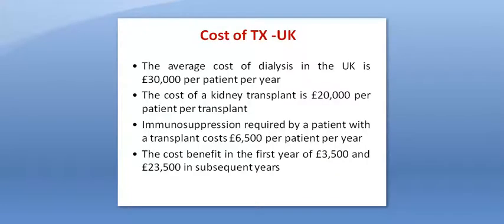Transplantation is cheaper than dialysis. In the UK, the average cost of dialysis is about £30,000 per patient per year, while the cost of kidney transplantation is £20,000 per patient per kidney transplant. The immunosuppression medications required cost around £6,500 sterling per patient per year. With simple calculation, in the UK in the first year of kidney transplantation you would save £3,500 sterling, and in subsequent years you will save £23,500 sterling. Although these figures will be different in different countries, it is likely that a successful kidney transplant after the first year is cheaper than staying on dialysis in many countries.